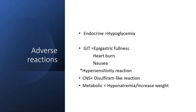Adverse reactions: In the endocrine system, we may deal with hypoglycemia. We are giving this medication for type 2 diabetes mellitus to bring down glucose levels, but that reduction may be in excess, and severe hypoglycemia is very possible. The gastrointestinal tract may cause epigastric symptoms, heartburn, and nausea. There may also be hypersensitivity reactions. The central nervous system can give a disulfiram-like reaction. Metabolic panel may show hyponatremia and features of increased weight.